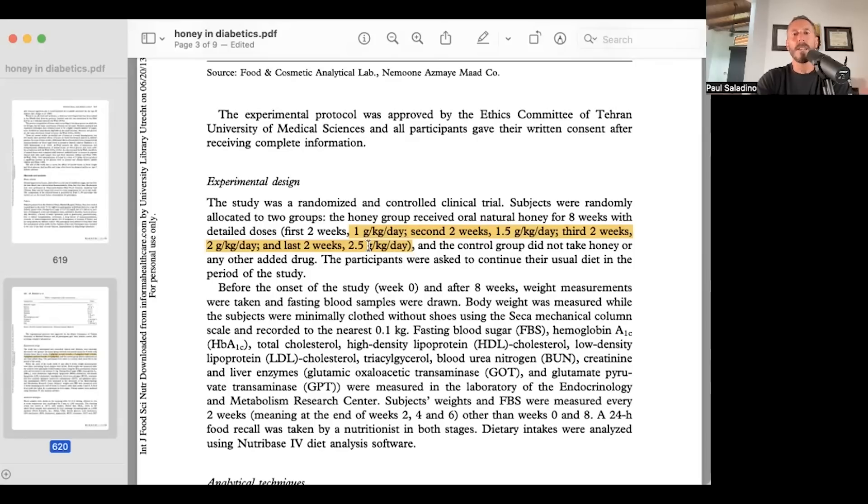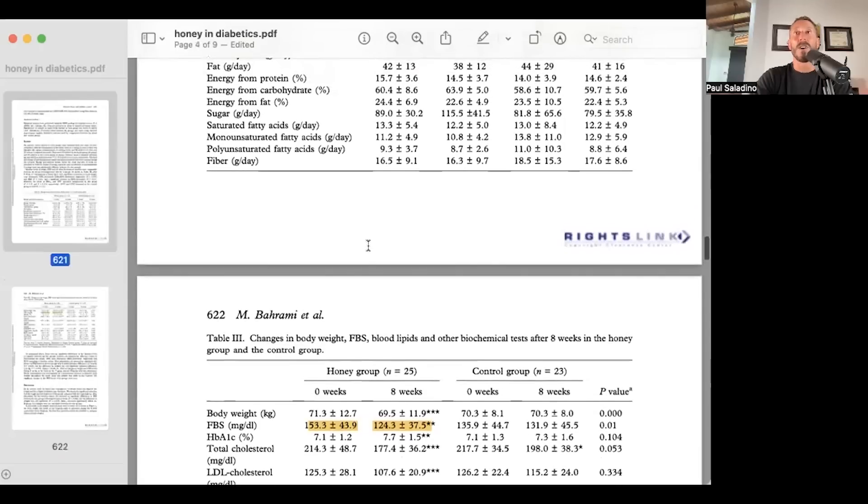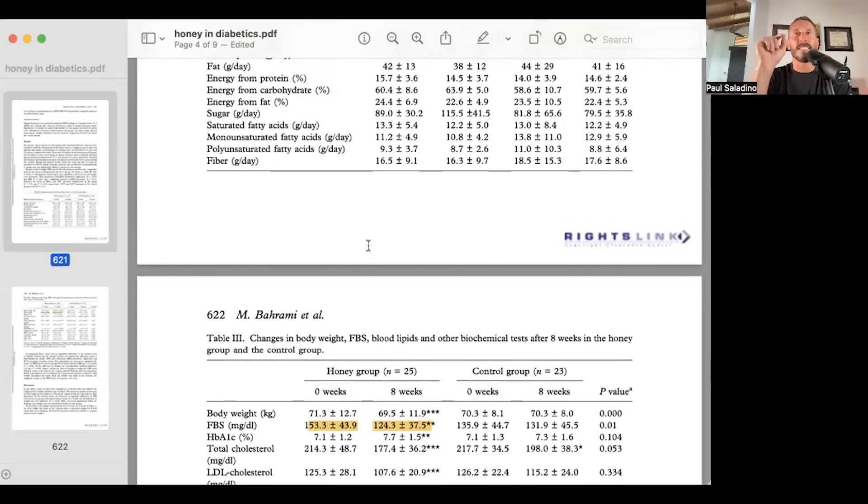I want to show you the results of the study. What these researchers found was that insulin sensitivity improved and lipids improved in the honey group. Now, blood sugars went up. I'll show you this in a moment. Hemoglobin A1C went up. But fasting blood glucose, the best metric of insulin sensitivity, went down in these diabetics. This was the only intervention they did.